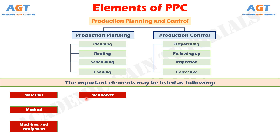Element number 5: Routing. This involves determining the flow of work and material handling in the plant, and the sequence of operations or processing steps. This is related to consideration of appropriate shop layout, plant layout, temporary storage location for raw materials, components and semi-finished goods, and of the materials handling system.